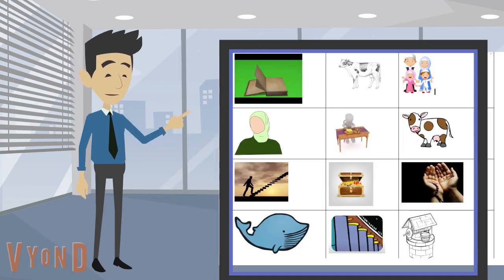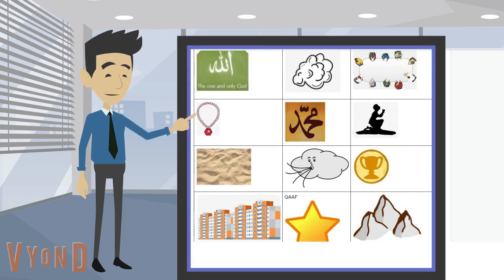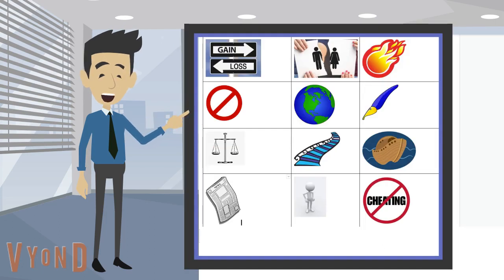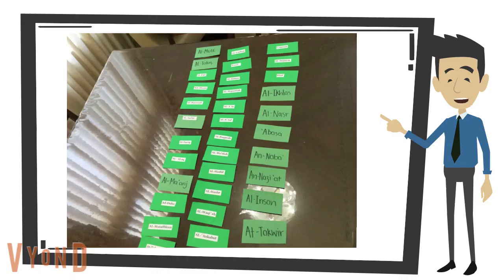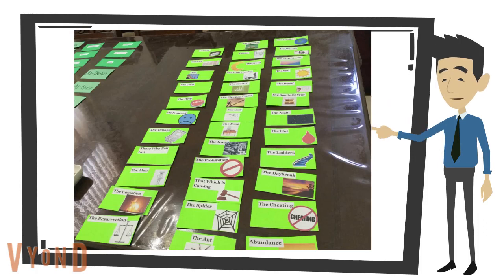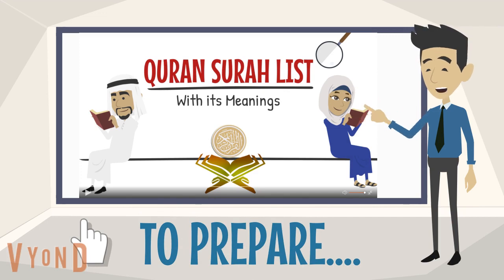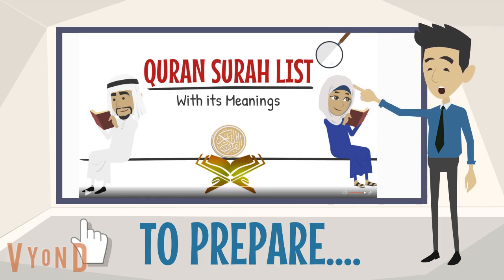Add pictures to the flashcards which have the meanings — this will make it easier for your understanding. The pictures will also be available as a link in the description box below. Here is an example of what the flashcards for the surah name will look like, and here is an example of the flashcards with the surah meaning and pictures. Before you play this game, watch our video titled Quran Surah List. This video will teach the surah name with its meanings and will prepare you in playing this game.